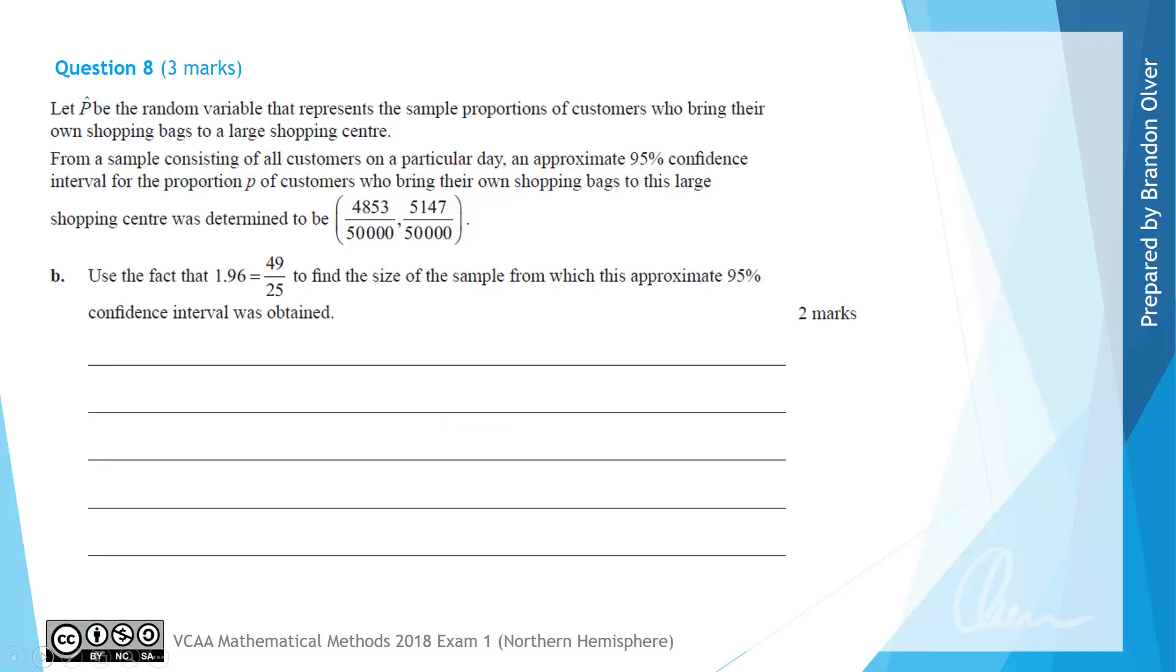For Part B, we are going to use the fact that 1.96 equals 49/25 to find the size of the sample from which this approximate 95% confidence interval was obtained.